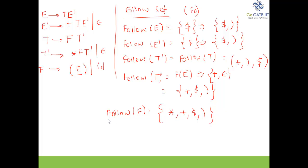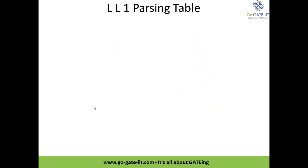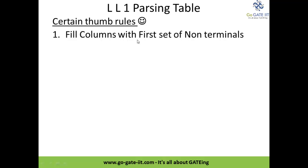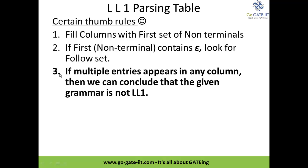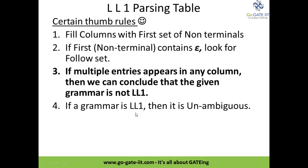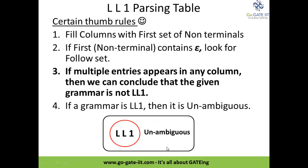Now we will see the construction of the LL1 parsing table. There are certain thumb rules: fill the columns with the first set of non-terminals; if first of a non-terminal contains epsilon then look for the follow set; if multiple entries appear in any column then the given grammar is not LL1. If a grammar is LL1 then it is unambiguous. So LL1 grammar is a subset of unambiguous grammars.